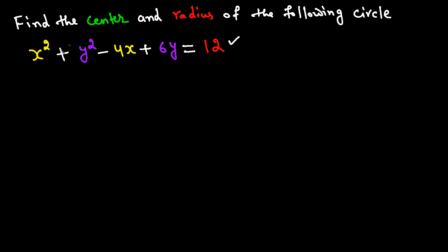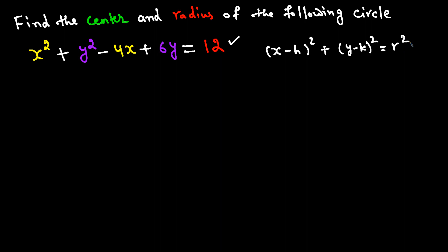In the second example, they give you the equation and ask you to find the center and the radius. The goal is to rewrite the equation in standard form — X minus H squared plus Y minus K squared equals R squared — so we can identify H, K, and R. To do this, we use a technique called completing the square.